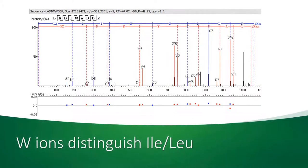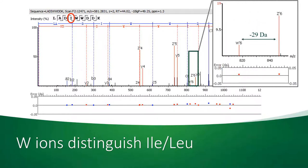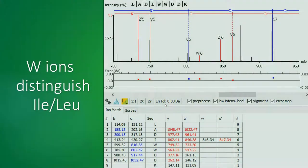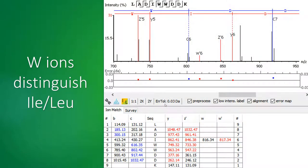Whereas isoleucine loses a 29-dalton ethyl group. For example, in this peptide, Z6 ions start with isoleucine because there is a peak that is 29 daltons smaller than the Z6 ion peak. In the software, we added ILW ion columns in the ion match table, and red color means that there are peaks matched to the theoretical m/z values.